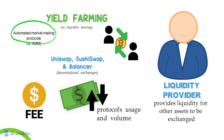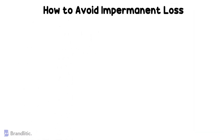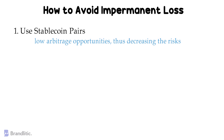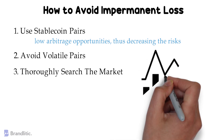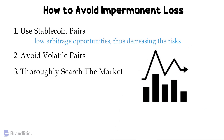Now that we know what impermanent loss is and how to calculate it, let's talk about how you can avoid it. Although there is no way to avoid impermanent loss completely, liquidity providers can take a few measures to mitigate the risk. First, use stablecoin pairs — providing liquidity in stablecoin pairs is the best bet against impermanent loss, since stablecoins don't fluctuate much, presenting low arbitrage opportunities. However, liquidity providers holding stablecoins cannot enjoy the rise in the crypto market. Second, avoid volatile pairs — pick pairs that don't expose liquidity to impermanent loss. Third, thoroughly search the market — since crypto markets are highly volatile, liquidity providers must know when to pull out their cryptocurrencies before the price deviates too far from the initial rate.